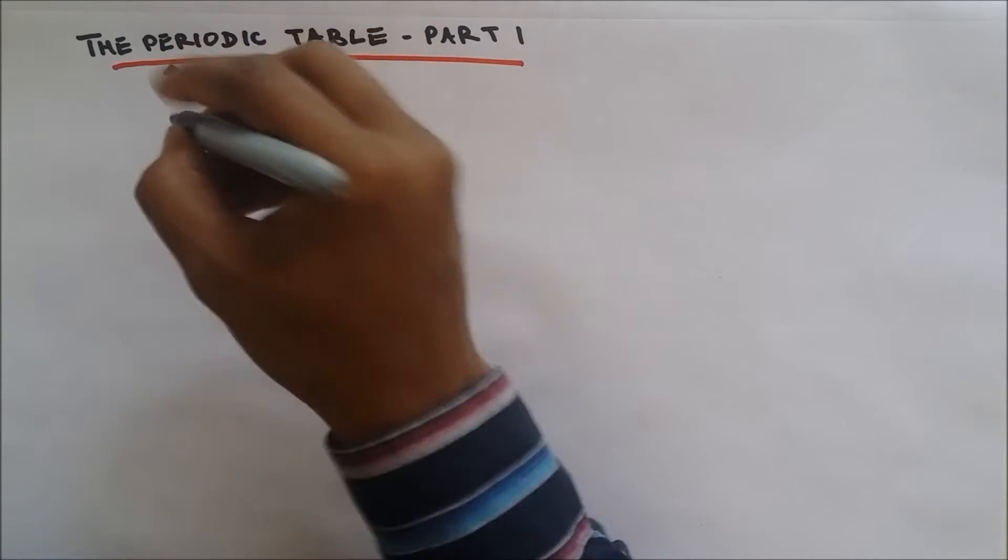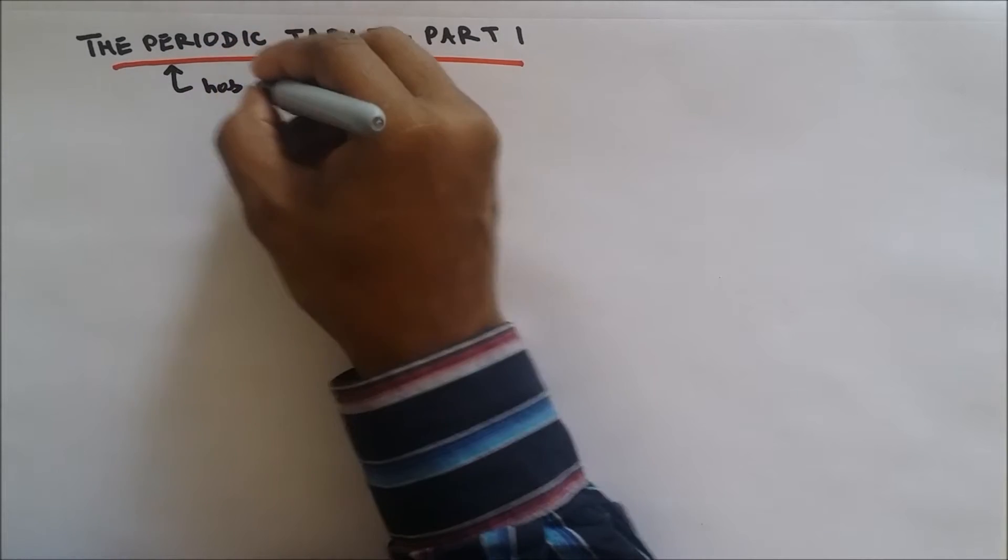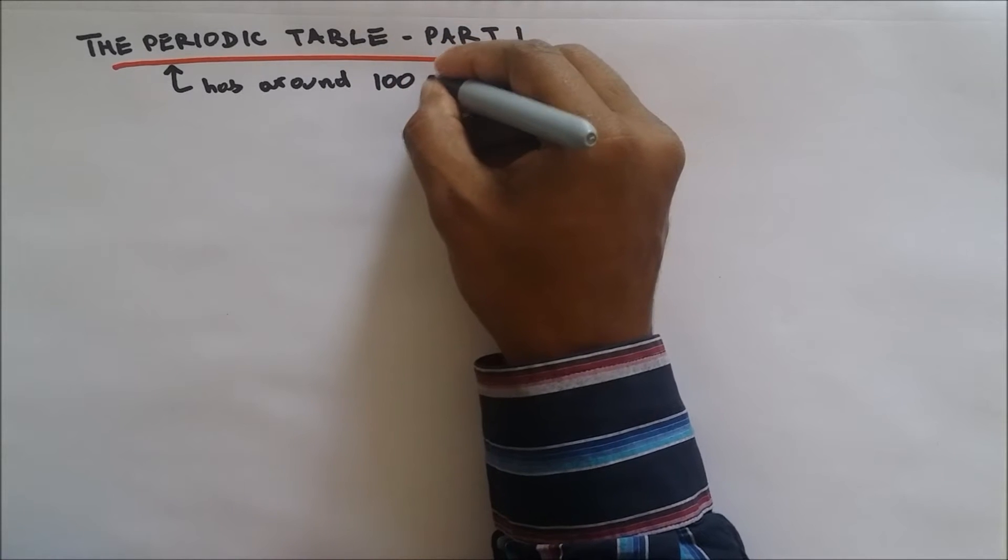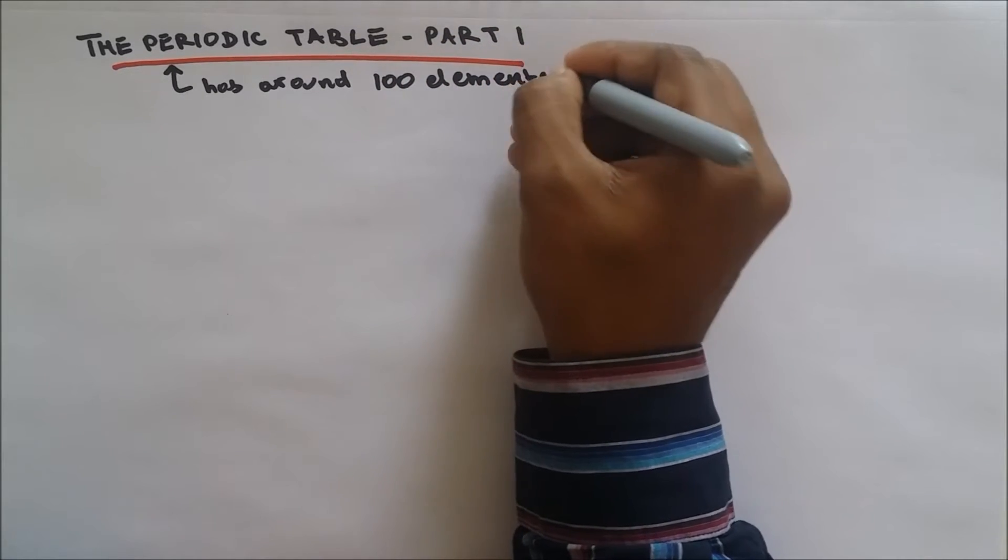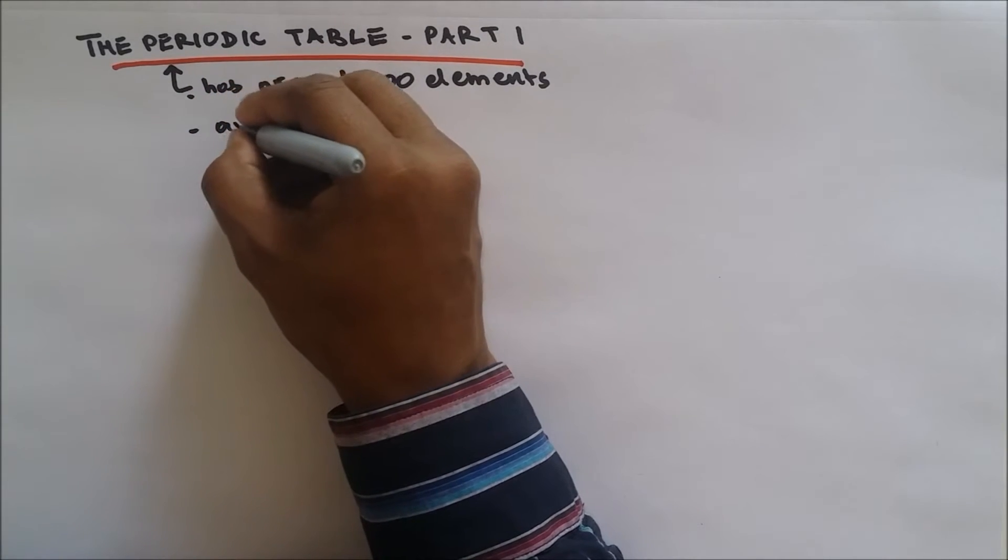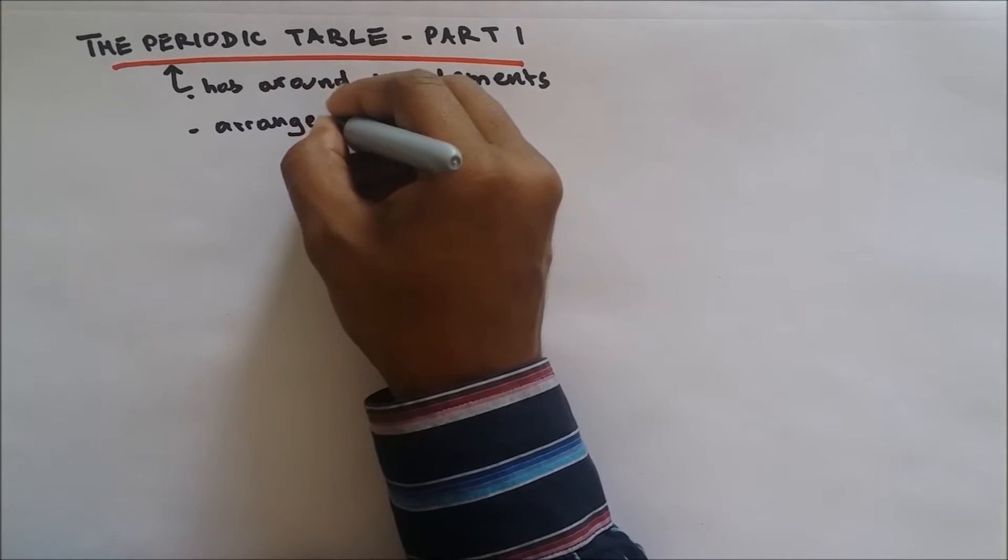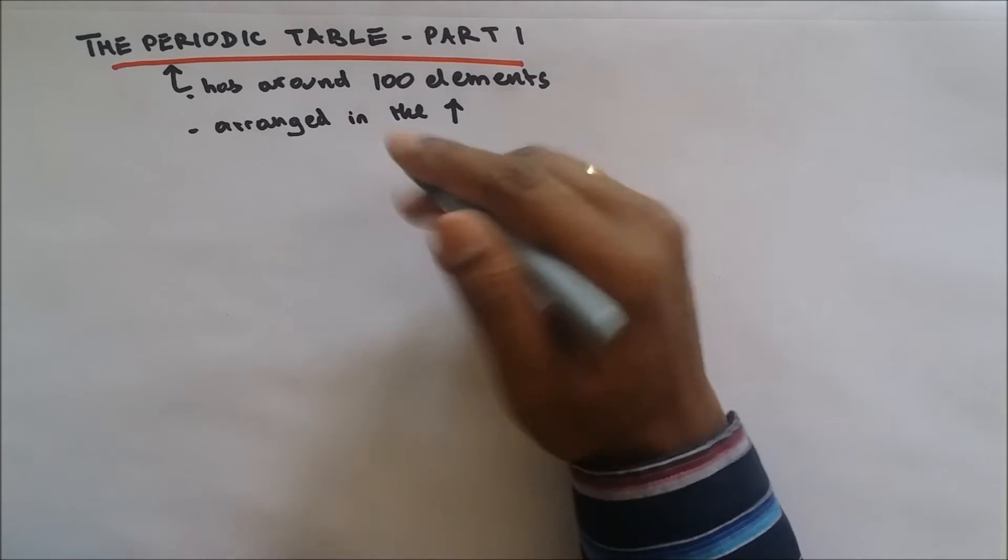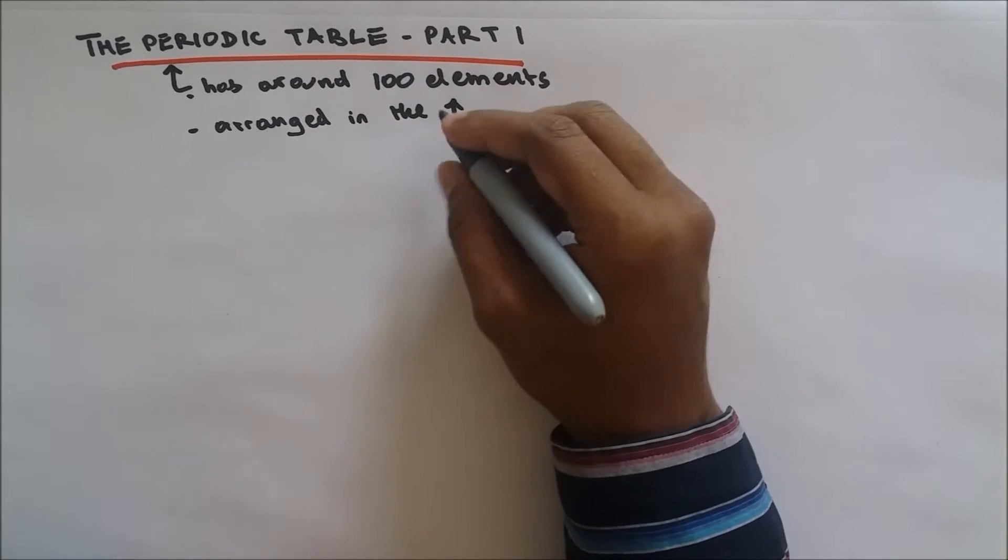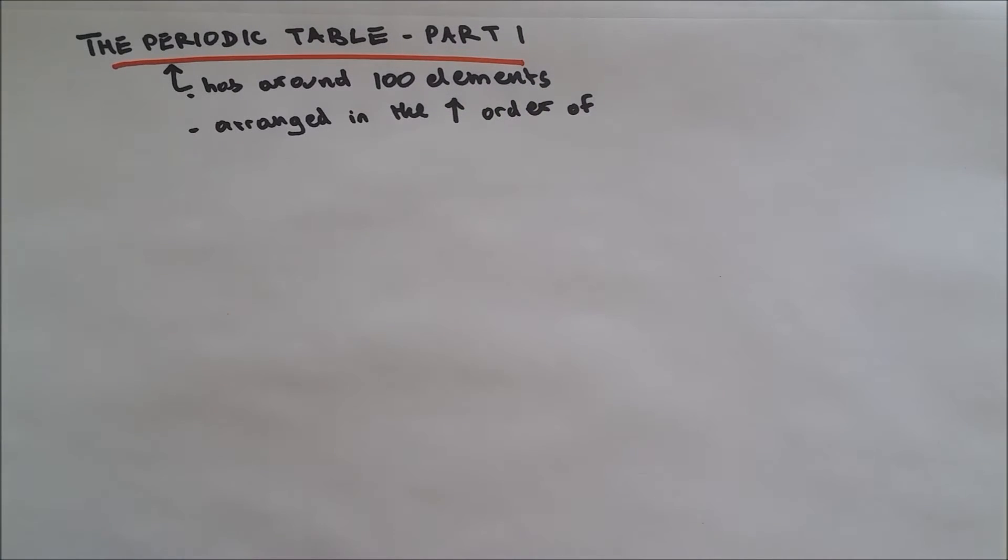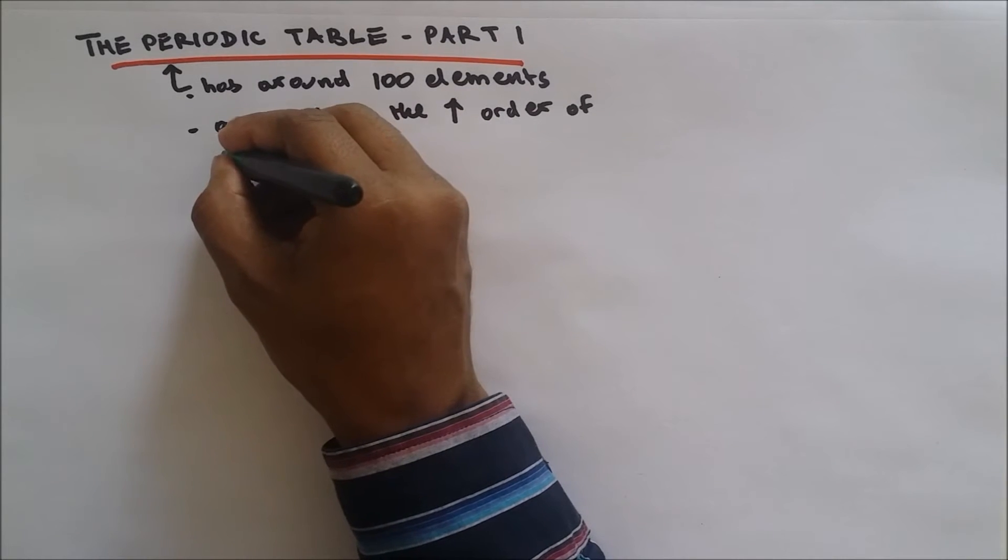The periodic table has around 100 elements and these 100 elements are arranged in the increasing order of proton number. The arrow going up means increasing.